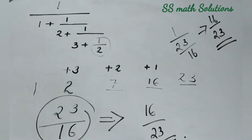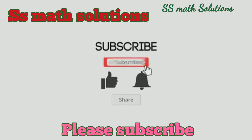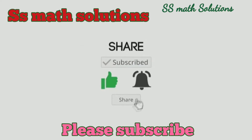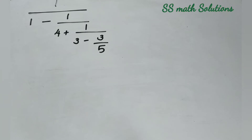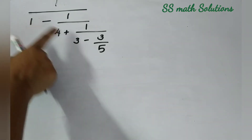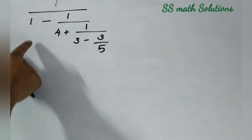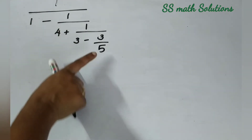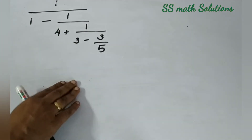Hope you understood. Let's try one more example. The question is: 1 divided by 1 divided by 1 minus 1 divided by 4 plus 1 divided by 3 minus 3 by 5. Here two minus signs are there, but in the previous case all were plus signs. No need to worry — the same method applies.